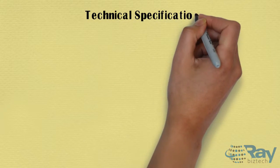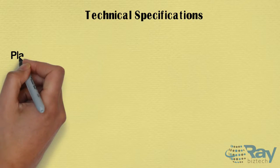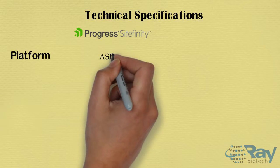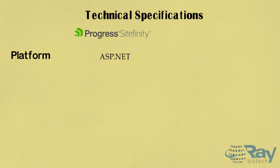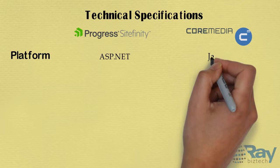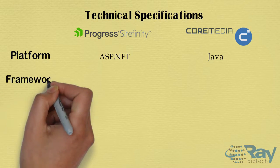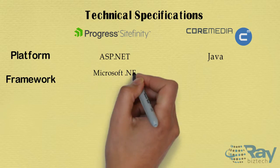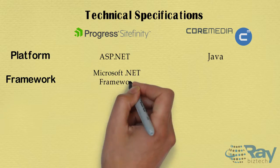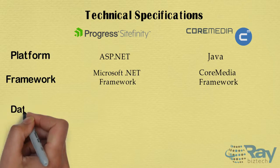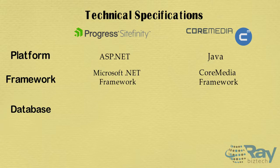Technical specifications: the platform for Progress SiteMedia is ASP.NET and for CoreMedia it's Java. The framework for SiteMedia is the Microsoft .NET Framework and for CoreMedia it's the CoreMedia Framework.